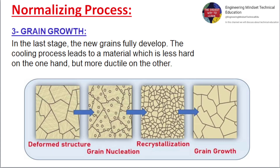Three: Grain Growth. In the last stage, the new grains fully develop. The cooling process leads to a material which is less hard on the one hand, but more ductile on the other.